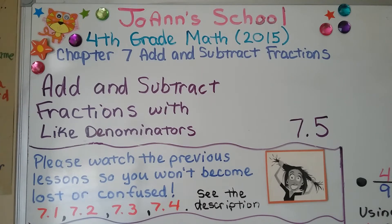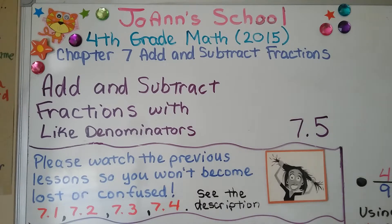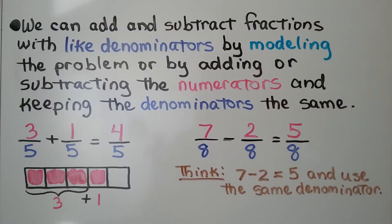We're now at 7.5, this is the fifth lesson for chapter 7, and we're going to add and subtract fractions with like denominators. It's really important that you have seen videos 7.1, 7.2, 7.3, and 7.4 that came before this one — they're linked in the description.